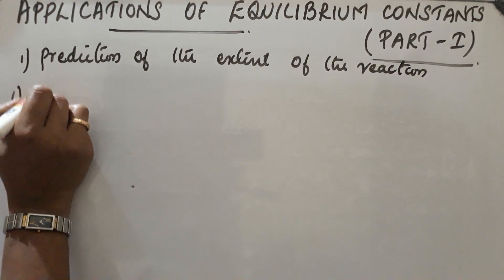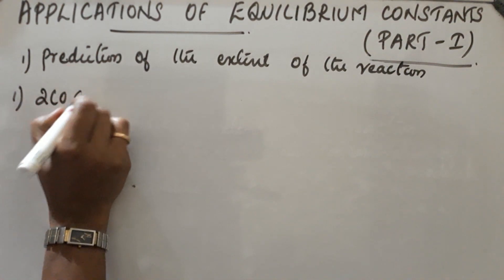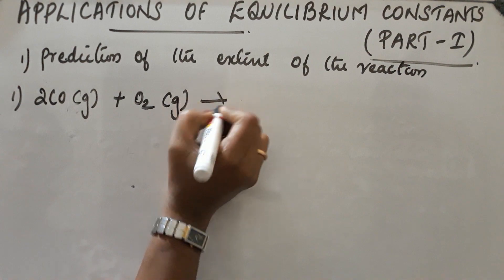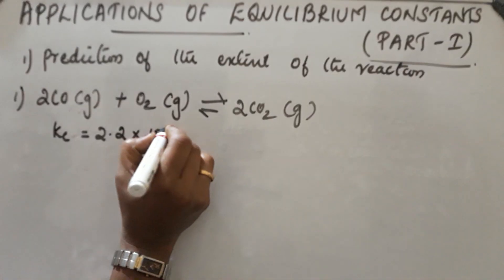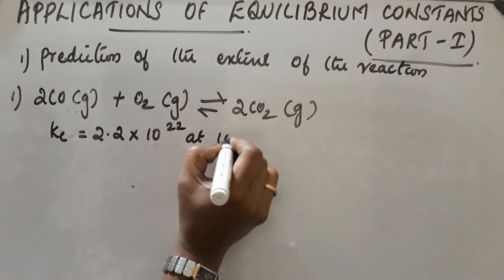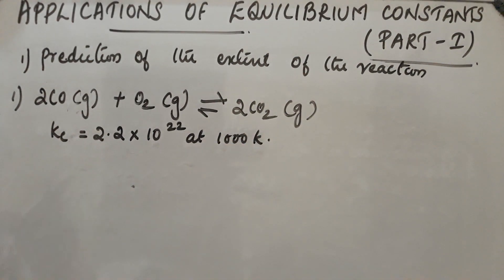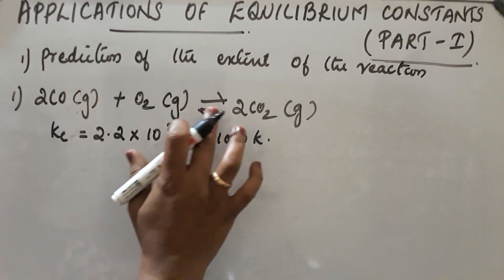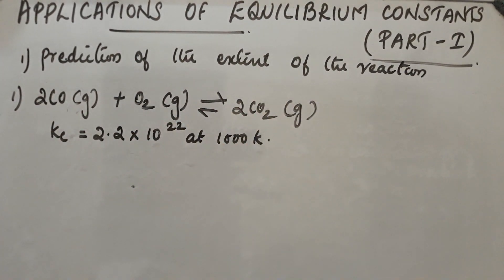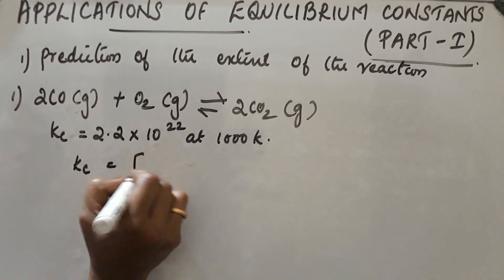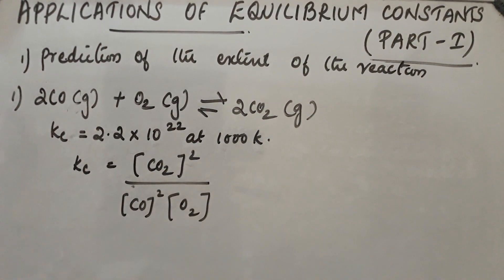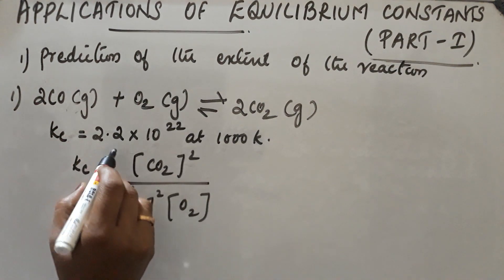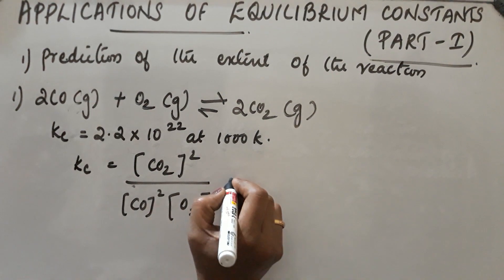First example: 2CO(g) + O₂(g) → 2CO₂(g). Here the equilibrium constant Kc is 2.2×10²² at 1000 K. The value of Kc is very high, meaning the forward reaction proceeds faster and it almost goes to completion. More CO₂ is obtained.